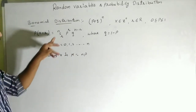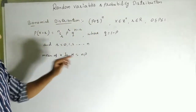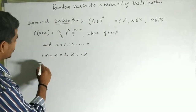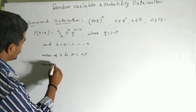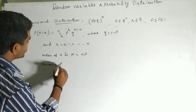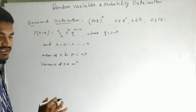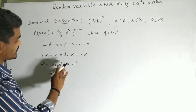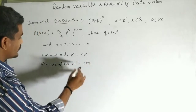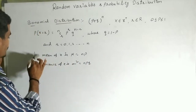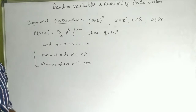The mean of the binomial distribution is np. The variance of X, denoted σ², equals npq. Based on these formulas, we will solve two questions.